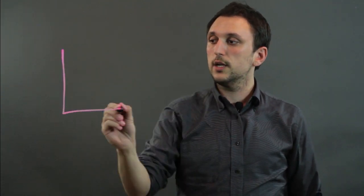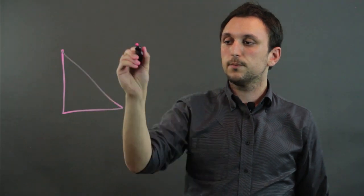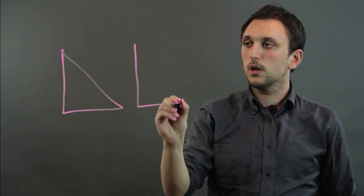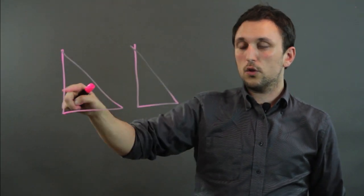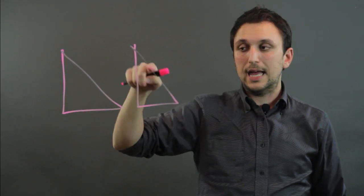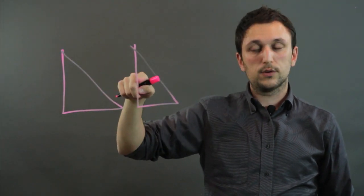Hi, I'm Charlie Kasov. I'm a math teacher and today we're going to learn the steps to prove that a triangle is congruent. Now with congruent triangles, it's different from similar triangles. Two triangles are congruent if all the sides and all the angles are equal.